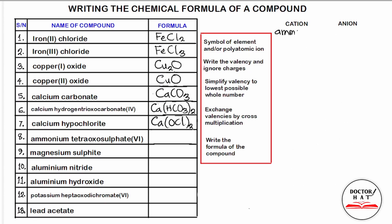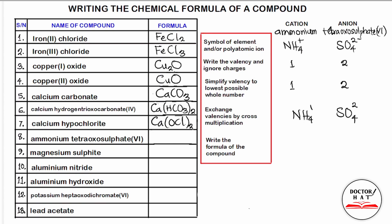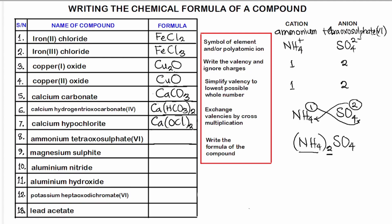Number eight: ammonium tetraoxosulfate(VI), also known as ammonium sulfate. The formula for ammonium ion is NH₄⁺ and tetraoxosulfate(VI)/sulfate ion is SO₄²⁻. The valency of ammonium is 1 and sulfate is 2. We cannot simplify 1:2. Cross-multiplying gives (NH₄)₂SO₄. The 2 belongs to the whole ammonium ion — not just hydrogen. The expanded formula is N₂H₈SO₄.